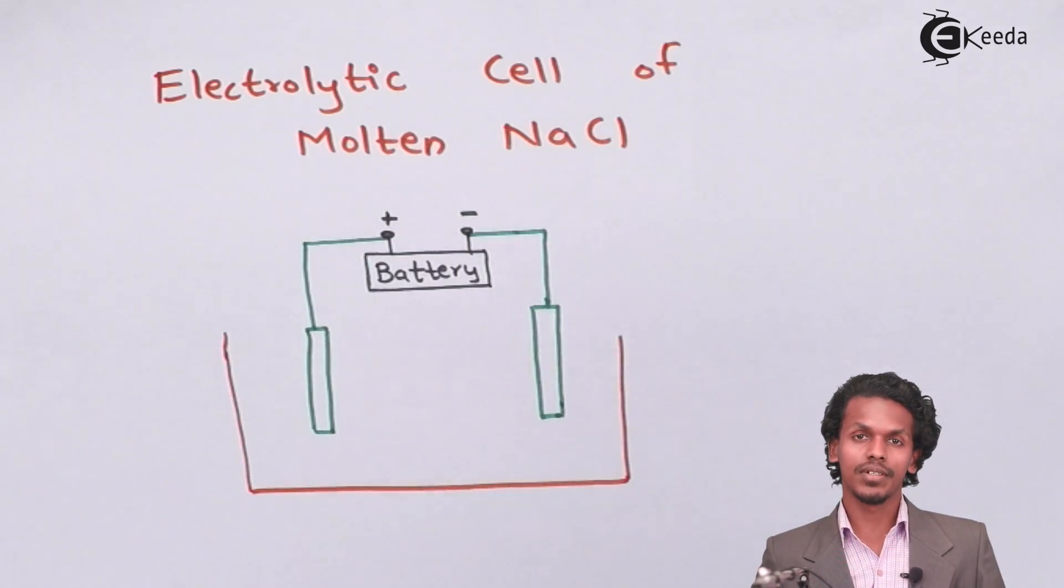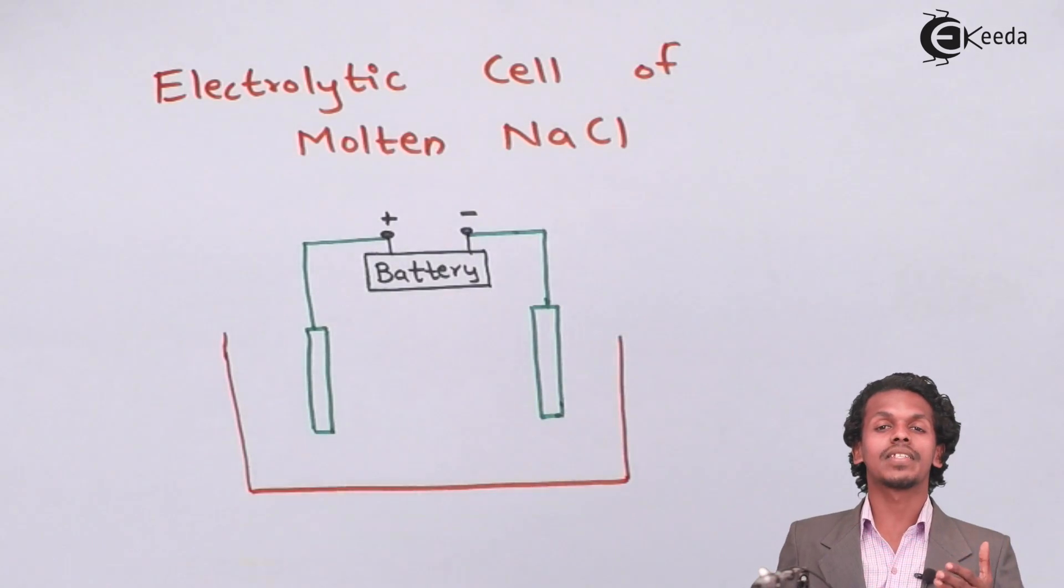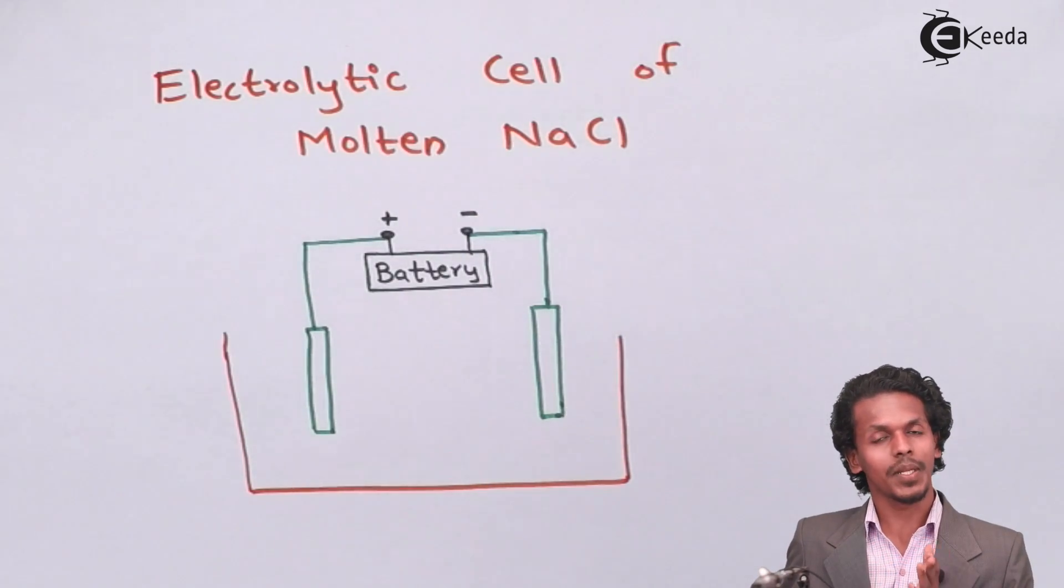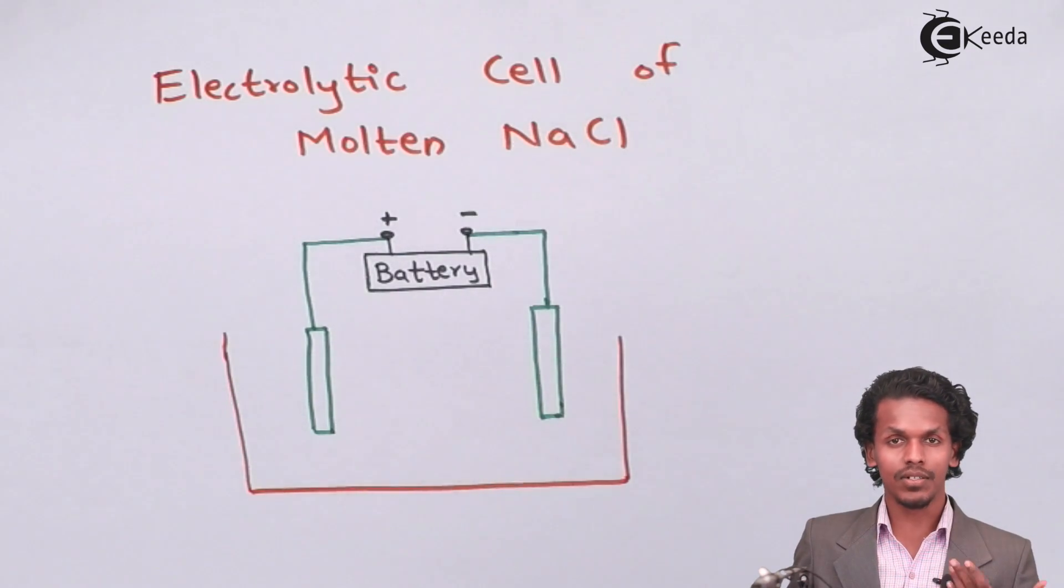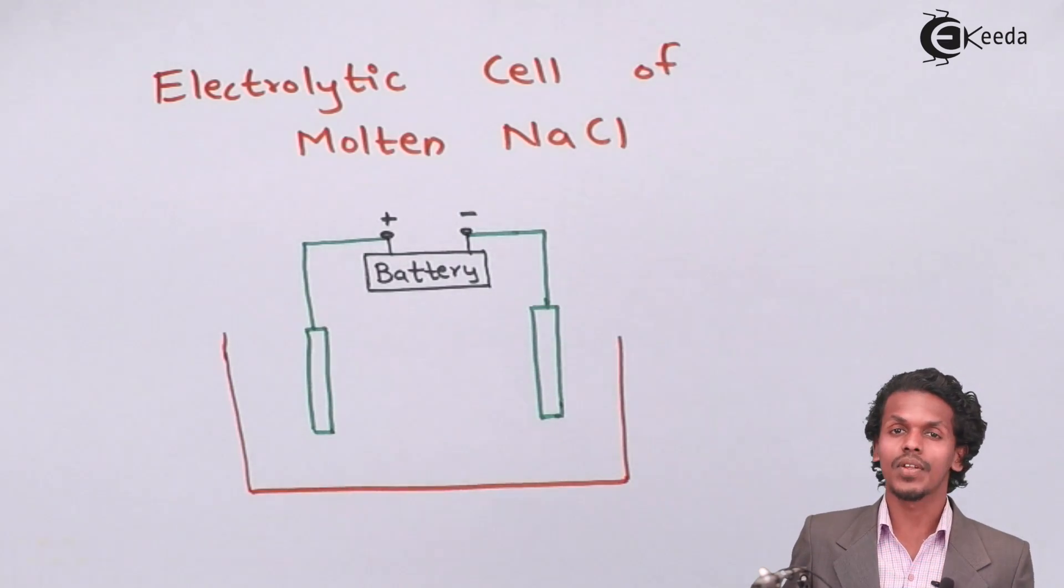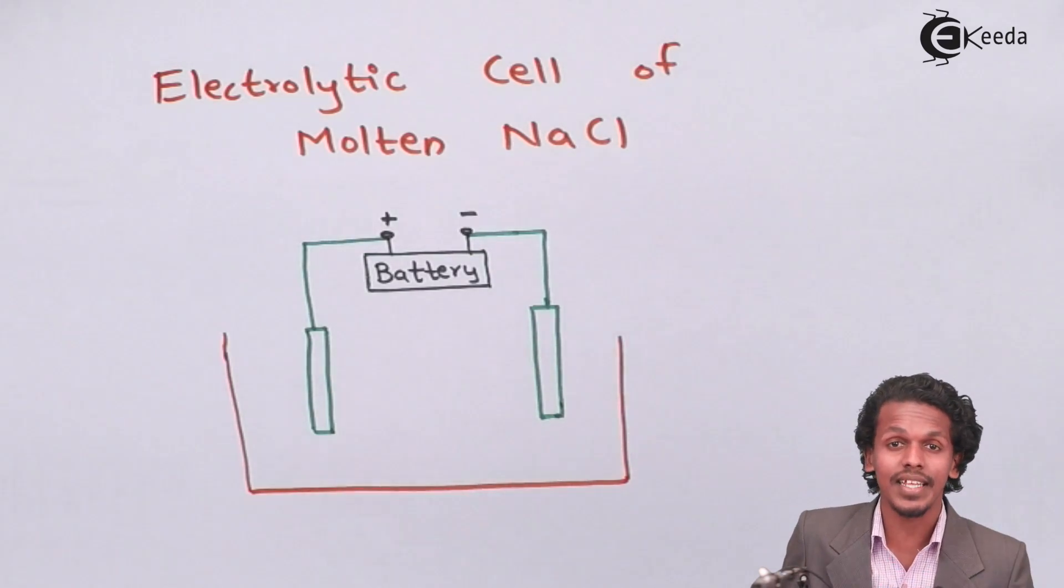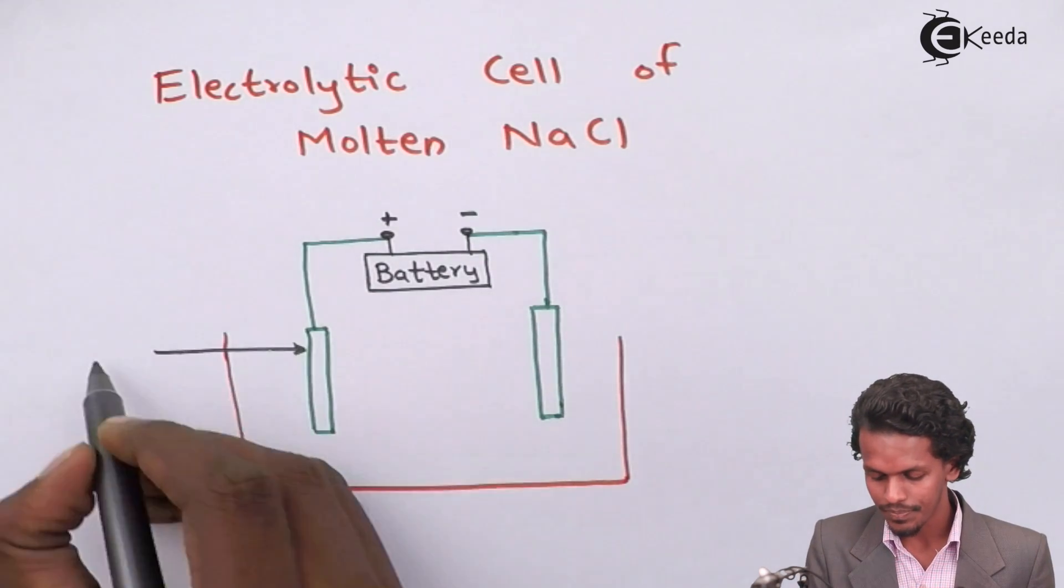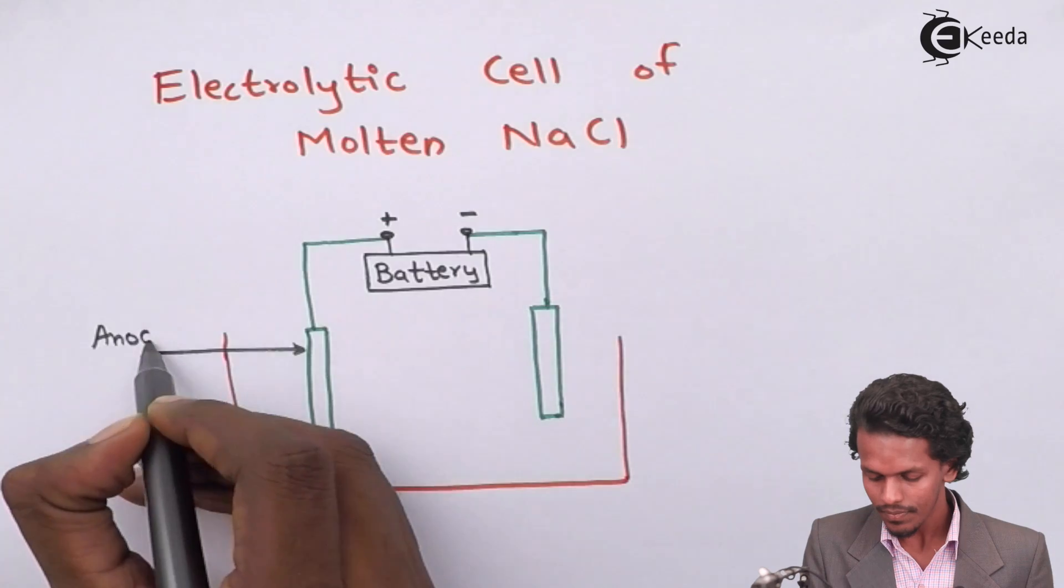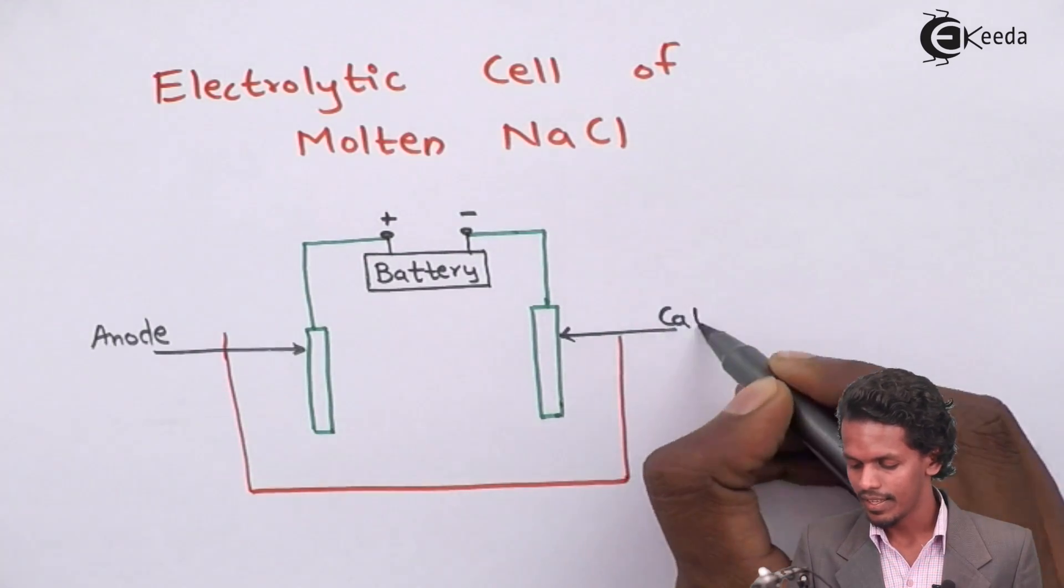One more thing I should tell you is that the anode should always be represented on the left-hand side, while the cathode should always be represented on the right-hand side. There are few IUPAC notations that we should follow. So in this case, this is basically anode, while this is a cathode.